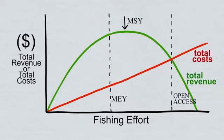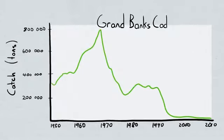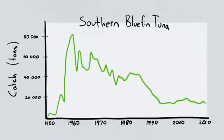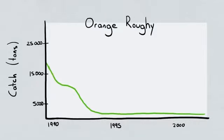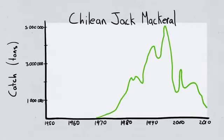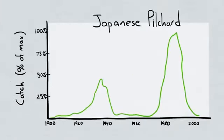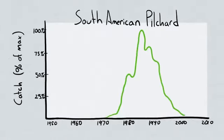Unfortunately, this seems to happen a lot, as has been seen in the Grand Banks, the Southern Tuna, New England Ground Fish, Northwest Atlantic Haddock, Atlantic Salmon, New Zealand Orange Roughy, Chilean Jack Mackerel, Japanese Pilchard, South American Pilchard, and others.